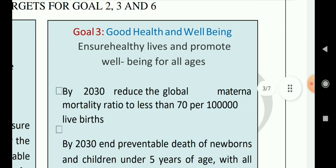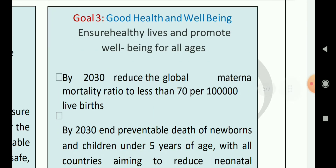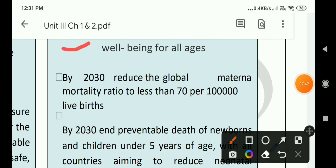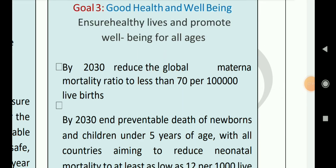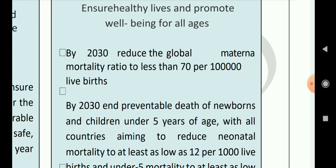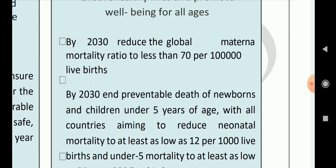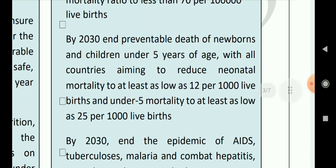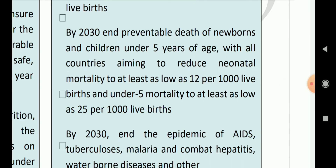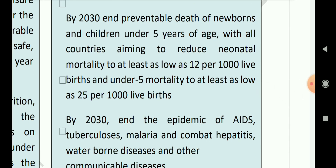Goal 3 consists of good health and well-being — it ensures healthy living and promotes well-being for all ages. The first target is: by 2030, reduce the global maternal mortality rate to less than 70 per 100,000 live births, mainly focusing on reducing death rates. The second target is: by 2030, end preventable deaths of newborns and children under five years of age, with countries aiming to reduce neonatal mortality to at least as low as 12 per thousand live births.